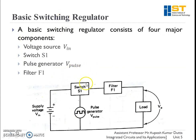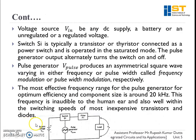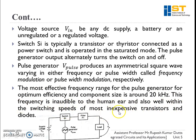This is a basic switching regulator block diagram with four components: voltage source V_in, switch S1, filter F1, and pulse generator V_pulse. V_in can be any DC supply, battery, or unregulated voltage. Switch S1 is typically a transistor or thyristor connected as a power switch and always operated in saturation mode. The pulse generator output V_pulse alternately turns the switch on or off and produces an asymmetrical square wave varying in either frequency (frequency modulation) or pulse width (pulse width modulation). The most effective frequency range for the pulse generator is around 20kHz, which is audible to the human ear and well within the switching speed of most transistors and diodes.